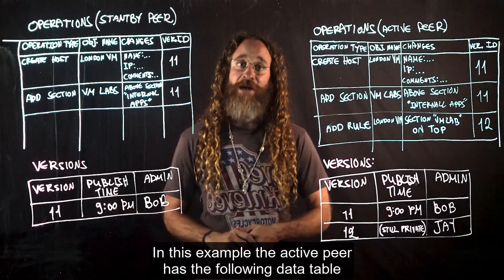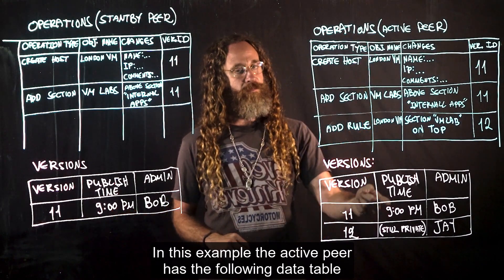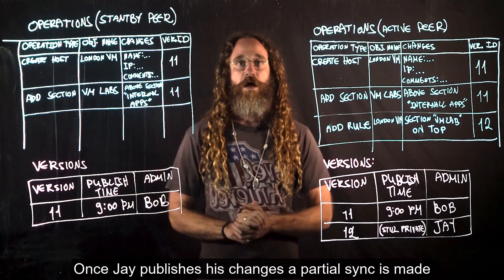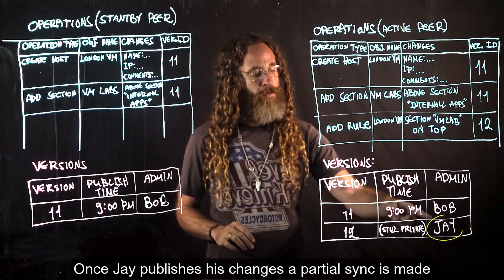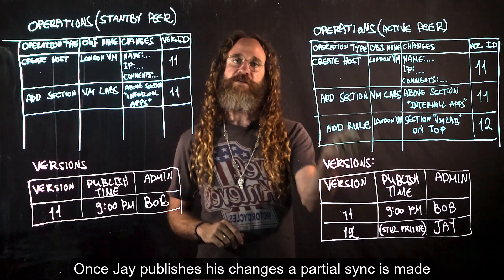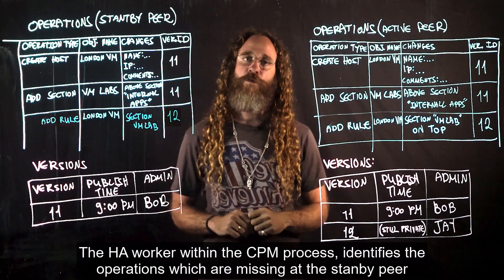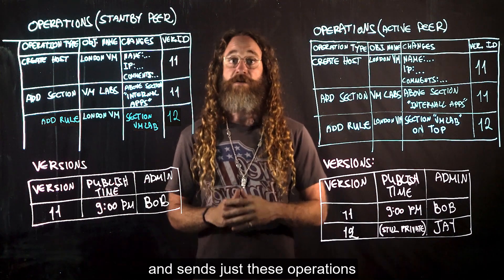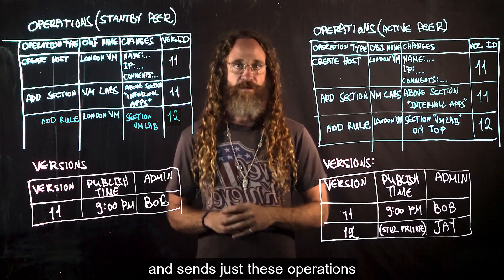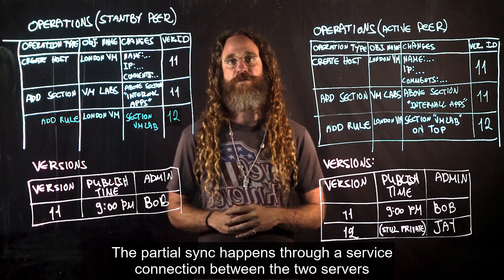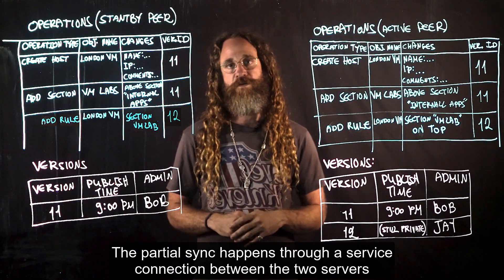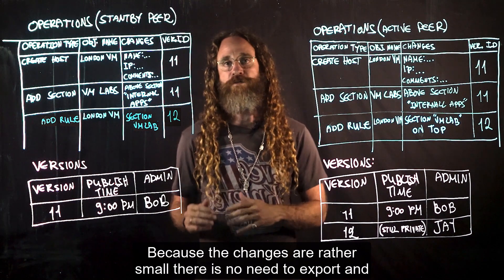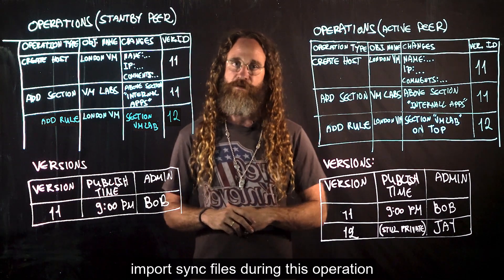In this example, the active peer has the following data table and the standby peer has this data table. Once a user publishes their changes, a partial sync is made. The HA worker within the CPM process identifies the operations which are missing at the standby peer and sends just those operations. The partial sync happens through a service connection between the two servers. Because the changes are rather small, there is no need to export and import sync files during this operation.